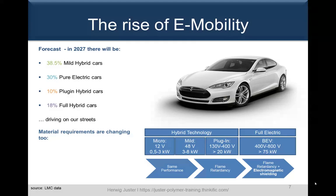For full electric cars with voltages between 400V and 800V and above, in addition to flame retardancy, electromagnetic shielding is an additional requirement, because we have to shield the different power electronic control units and ensure proper functioning of all these components.